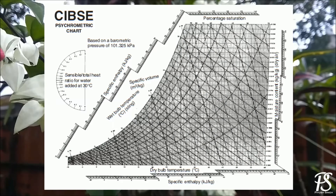There are only two psychrometric processes which involve only latent heat transfer. These processes are dehumidification and humidification. Let us consider an example of a humidification process 1-2. As is seen from the figure, a humidification process is a vertical line on the psychrometric chart, which coincides with constant dry bulb temperature lines. Hence, the dry bulb temperature for both points 1 and 2 lie on the same point. However, the dew point temperature lines are represented by uniformly spaced horizontal lines, hence the dew point temperature for points 1 and 2 do not coincide.